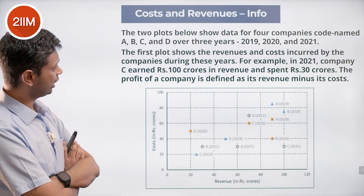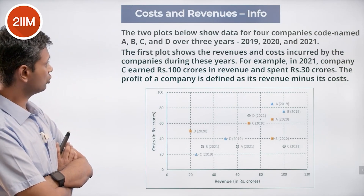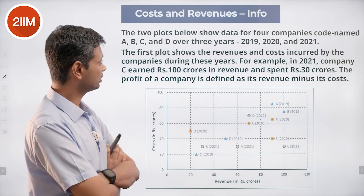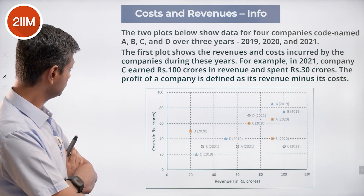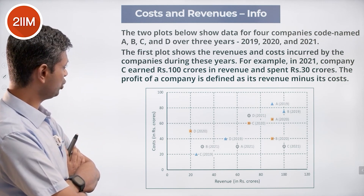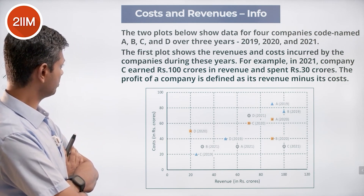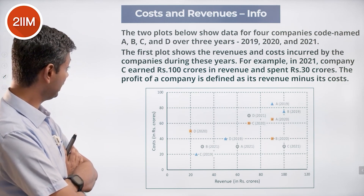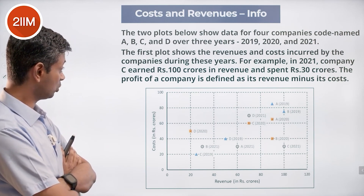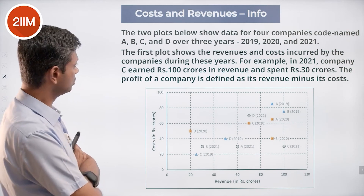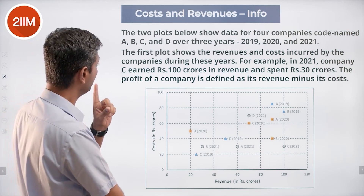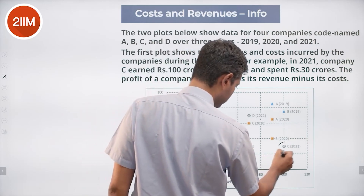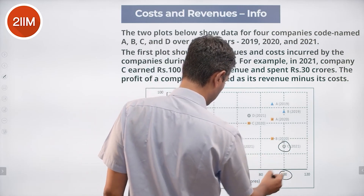The two plots below show data for four companies code-named A, B, C, and D over the years 2019, 2020, and 2021. The first plot shows revenues and costs incurred by companies during these years. For example, company C in 2021 earned 100 crores and spent 30 crores.